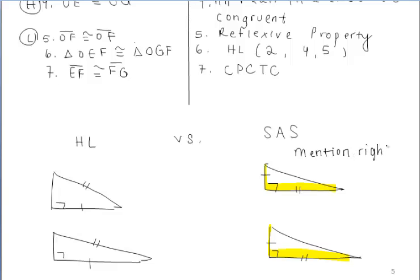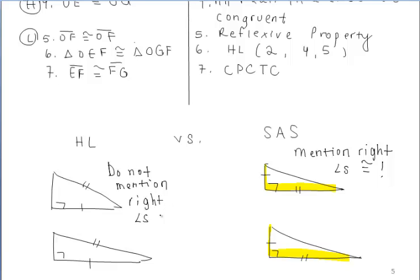If you use side angle side within your proof, you do have to add a step that mentions that the right angles are congruent. If you use HL, you do not have to mention that the right angles are congruent — you just have to mention that you have right angles in the diagrams.